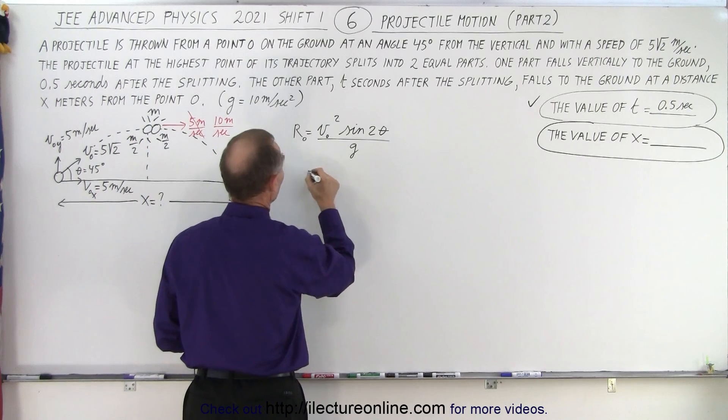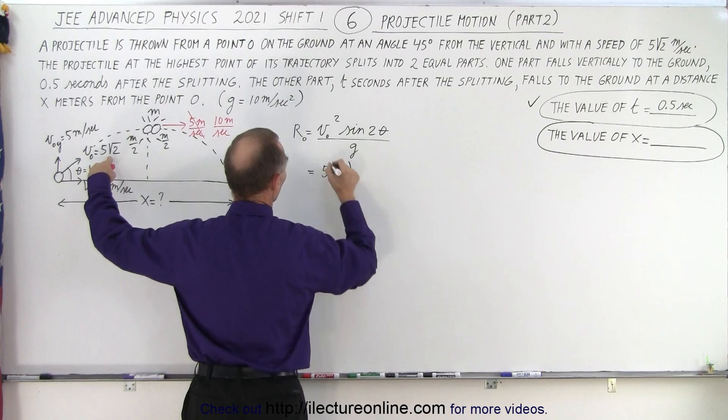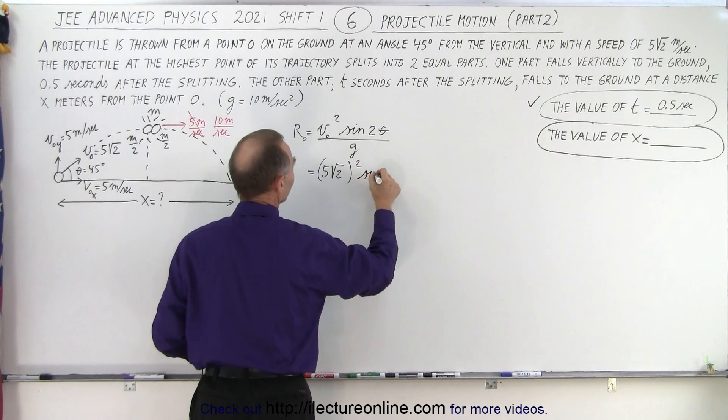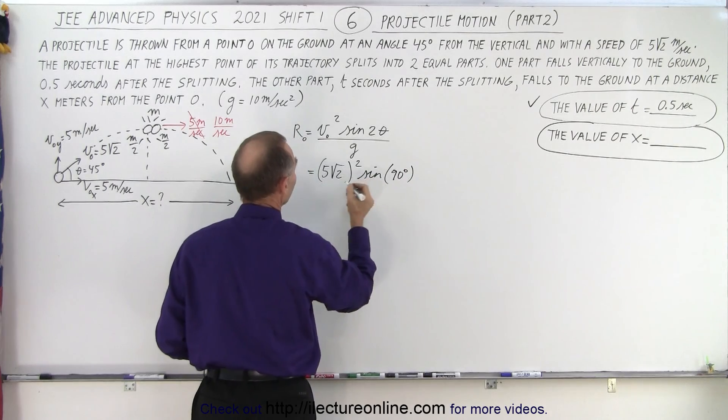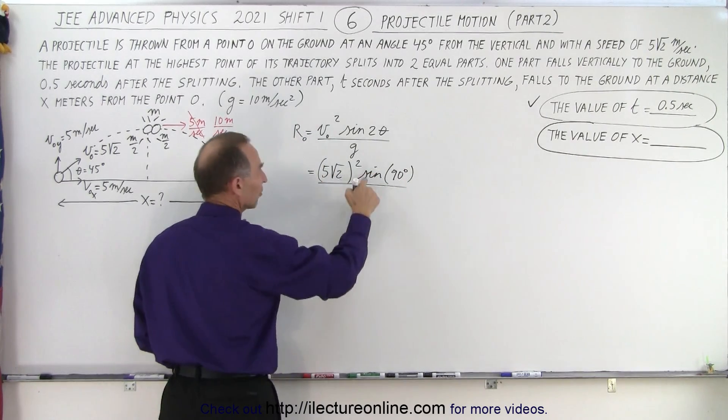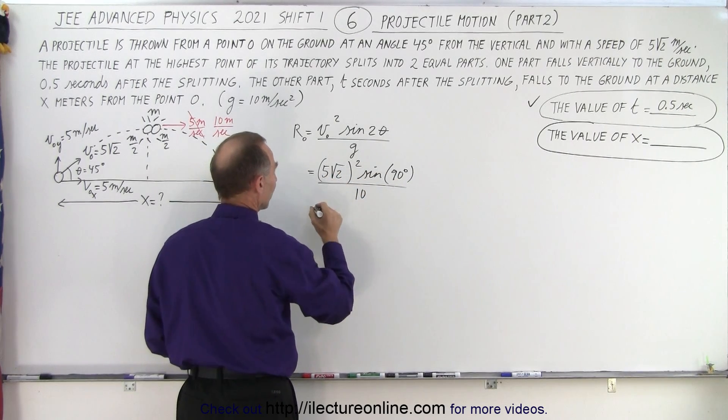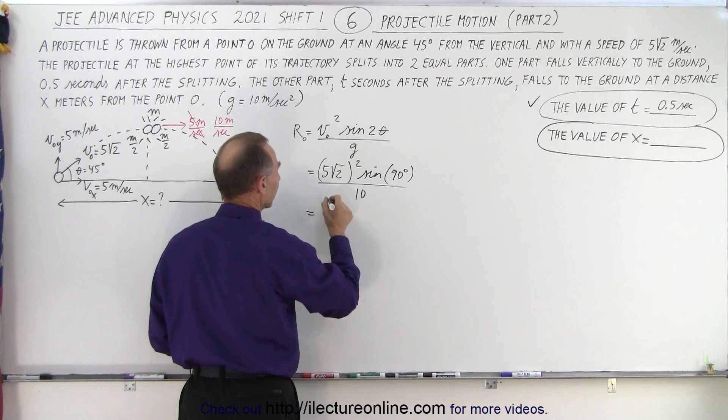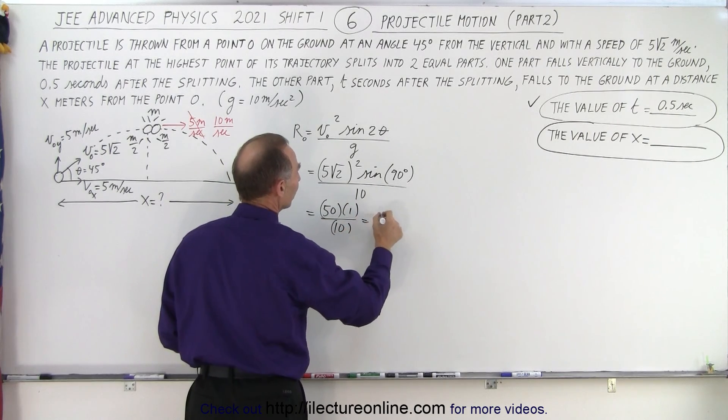So in this case that would have been equal to the initial velocity, 5 times the square root of 2 quantity squared times the sine of twice the angle, which is therefore 90 degrees, twice 45, divided by g, which is 10. Of course the sine of 90 is 1, that would be 2 times 25, which is 50, so it would be 50 times 1, divided by 10, which is equal to 5 meters.